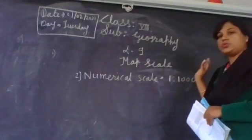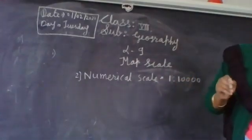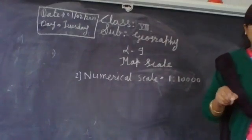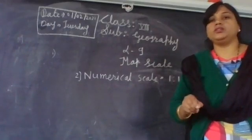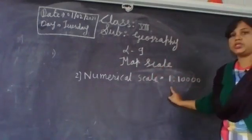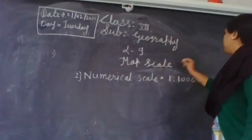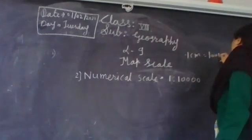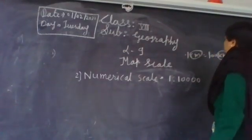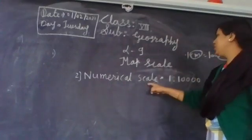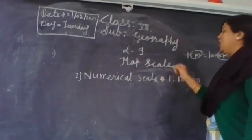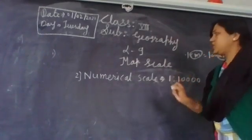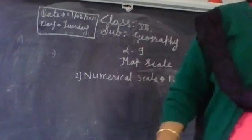One is to 10,000. A scale in which distances are expressed as a ratio is called a numerical scale. So instead of wording, here you express distances in terms of a ratio. This kind of scale is called the numerical scale.